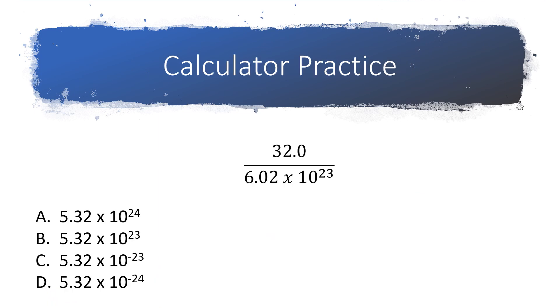OK, folks, time for a little bit of formative assessment. Formative assessment is a check along the way to see if you are getting it. So let's check right now if you are getting this entered correctly into your calculator. I want you to take 32 and divide it by 6.02 times 10 to the 23rd and see which one of these answers you get. You may want to pause the video at this point to give yourself a chance to work that out.